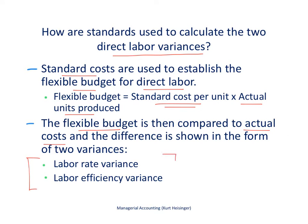We have the labor rate variance and the labor efficiency variance. We're going to break out the difference from the flexible budget to our actual costs related to direct labor, and we'll look at them by way of two different variances: the labor rate variance and the labor efficiency variance.